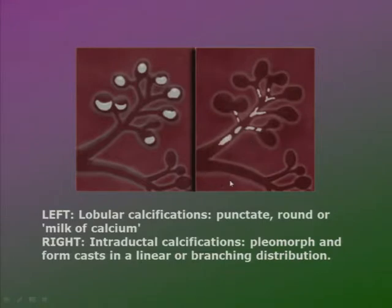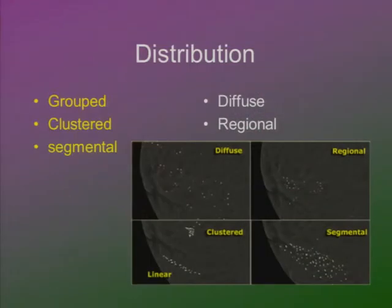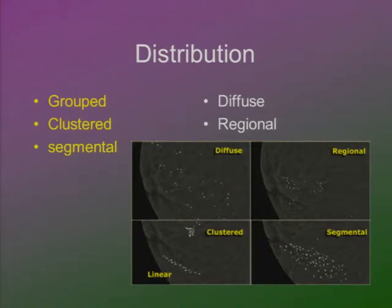Calcifications following the track of the duct are probably malignant. Regarding distribution: if they are in a group, in small clusters, or cover a whole segment, they're suspicious or malignant. If they're diffuse or cover a region without any specific architectural characteristics, they're probably benign.